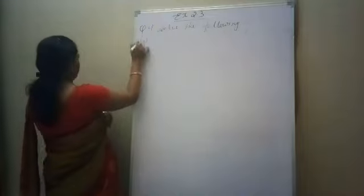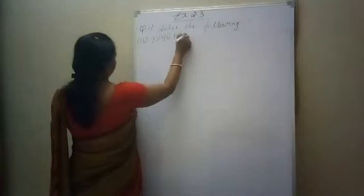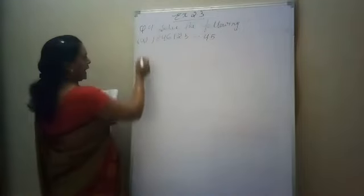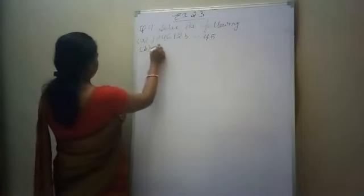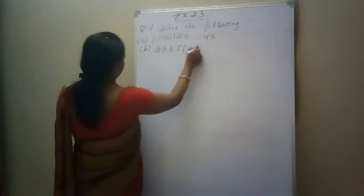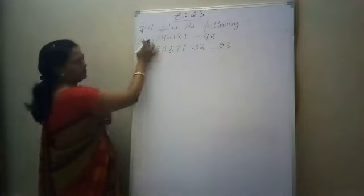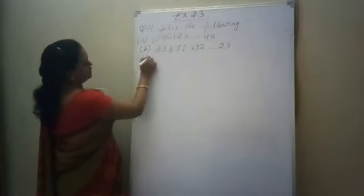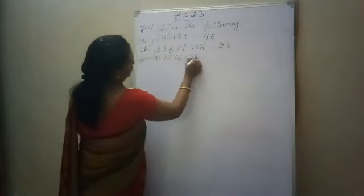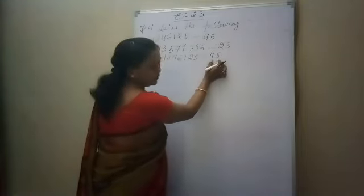Here also we will do only 2 parts. Number 1 is 1,846,125 divided by 45. And one more part, B part: 2,357,392 divided by 23. There are 4 and 5 parts but we will do only 2 parts. When we solve 1,846,125 divided by 45, we don't know the table of 45, so first we will make the table of 45.